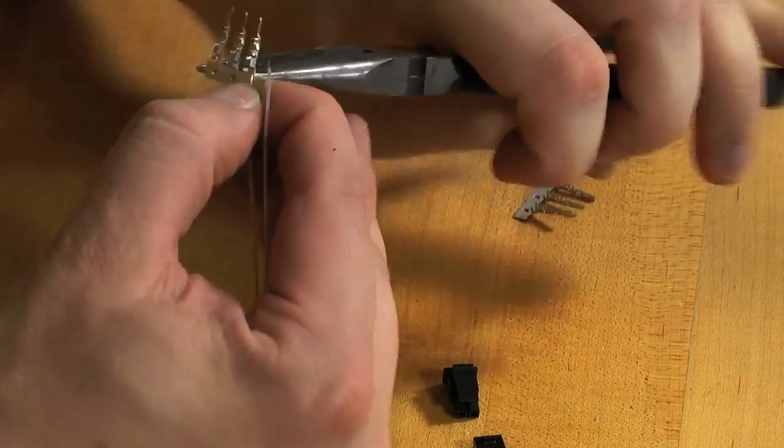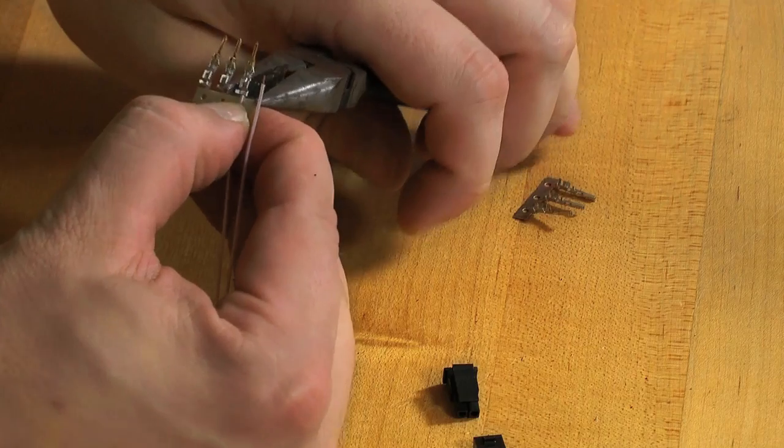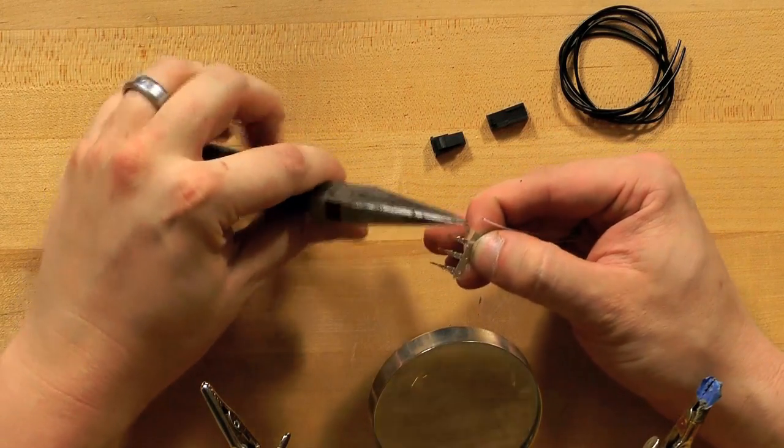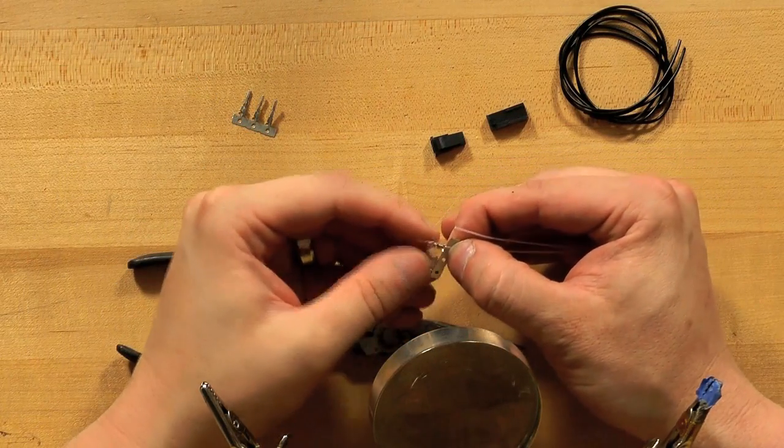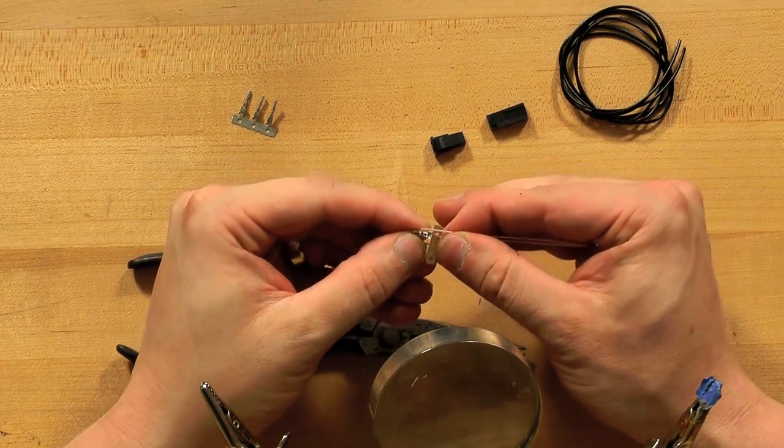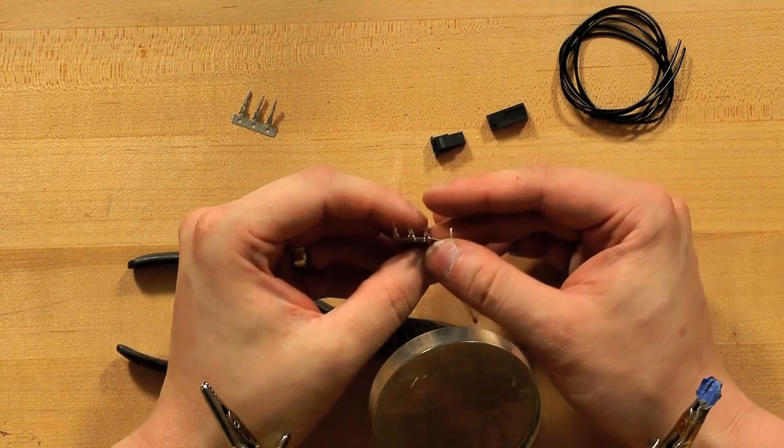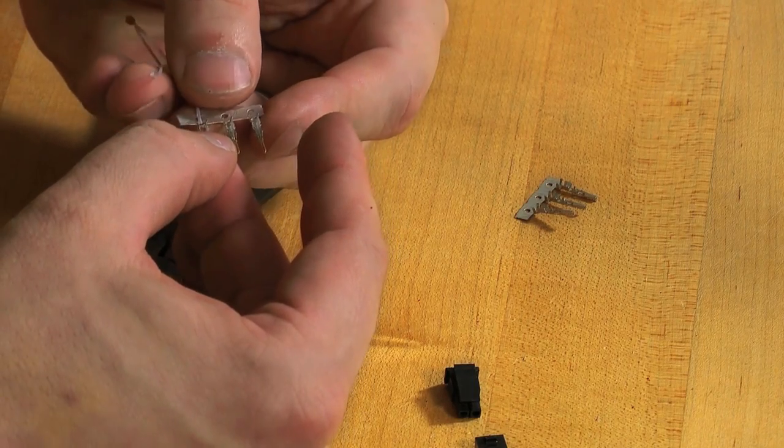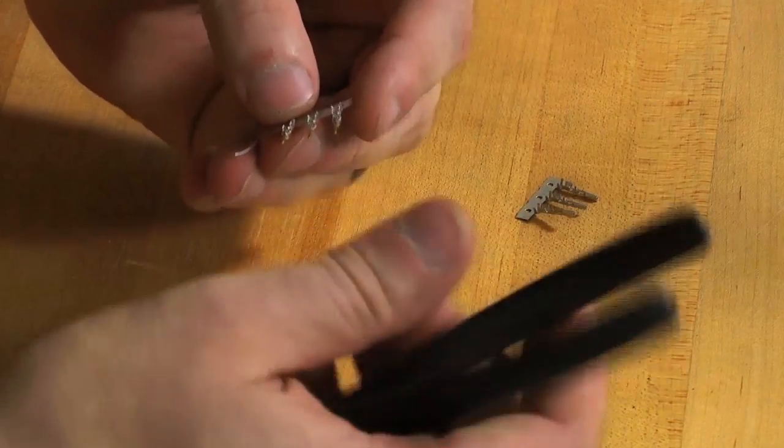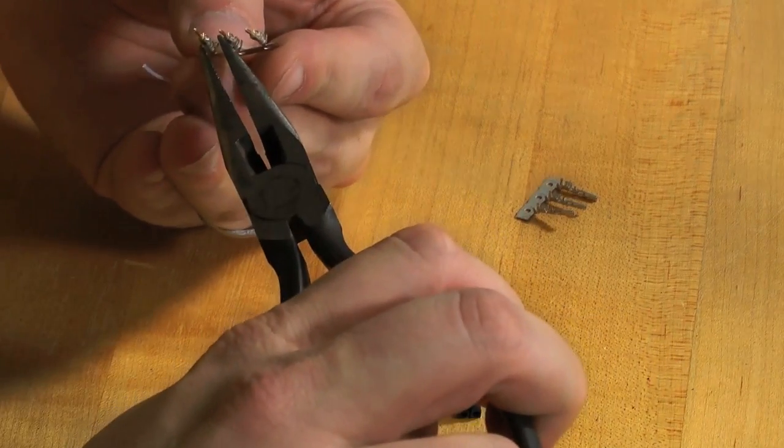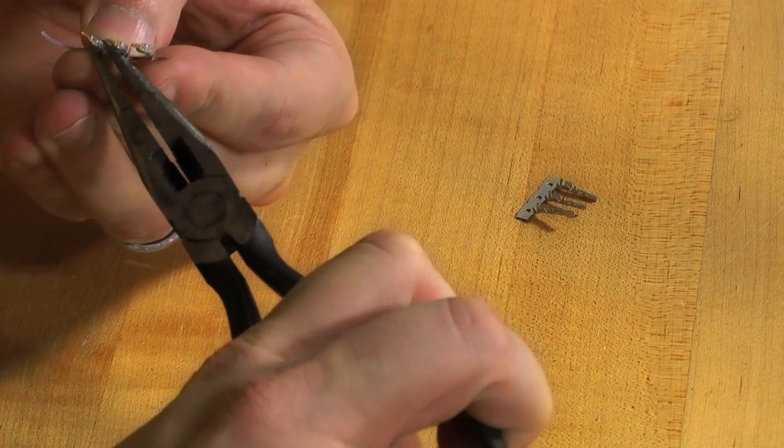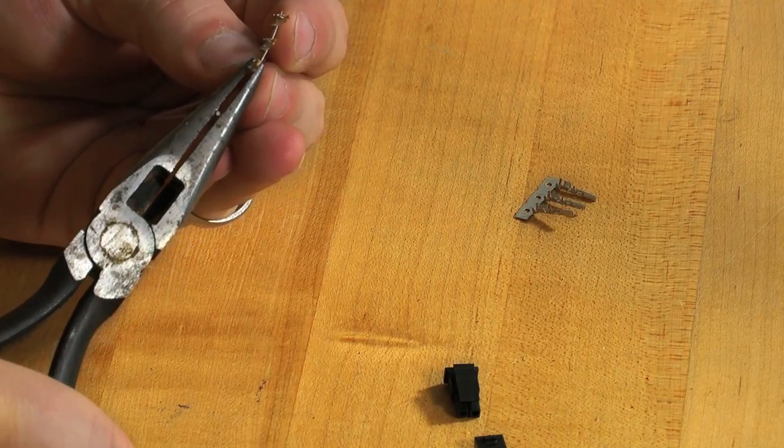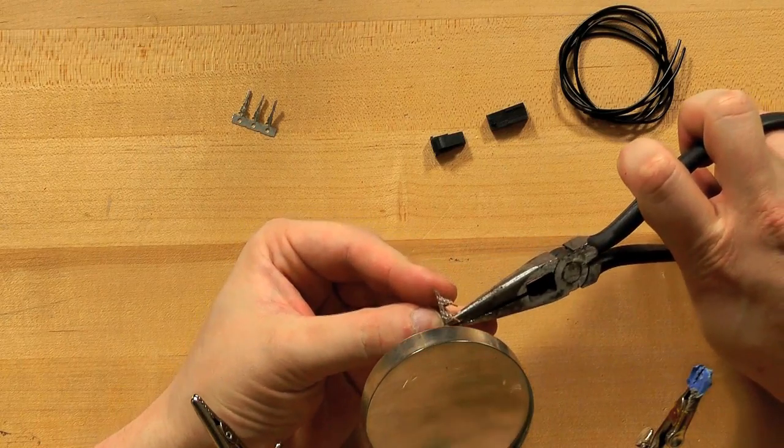Squeeze it down and then do the other one, roll it in. That one's not going to want to roll so well. Just double check to make sure I've got the insulation all the way in there before I crimp this down. Fold that back one over and crimp it down.